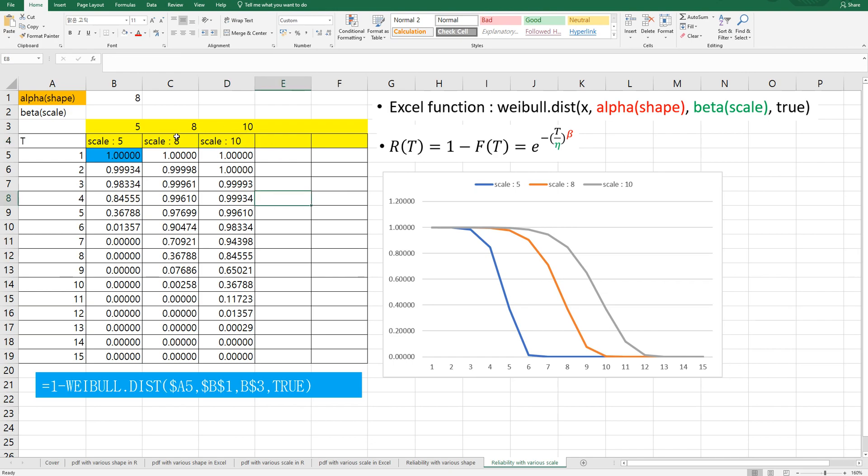And again, if you fix shape but change scale from 5 to 10 or 12, as you can see, the opposite S-curve actually moves from left to right. So this is kind of characteristic when you change shape and scale about reliability.